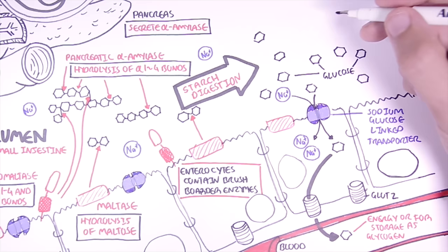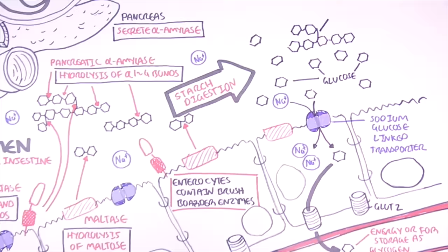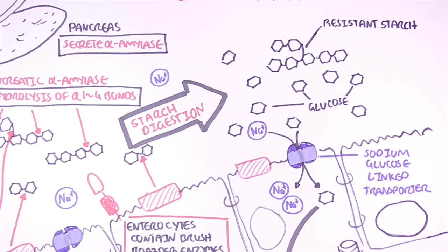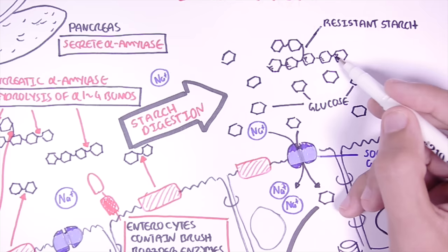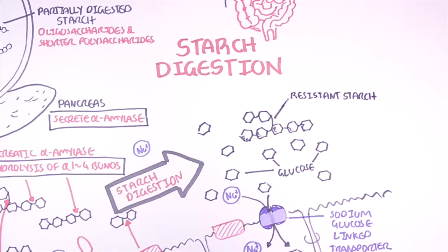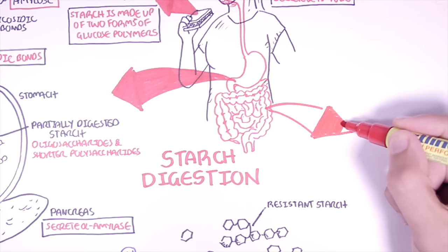However, not all portions of starch is digested in the small intestine. The portion of starch that resists digestion in the small intestine are known as resistant starch. And this fraction of starch will essentially reach the colon. So what happens to this resistant starch when it reaches the colon?